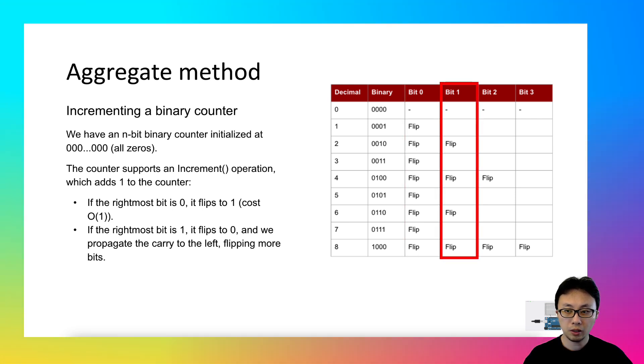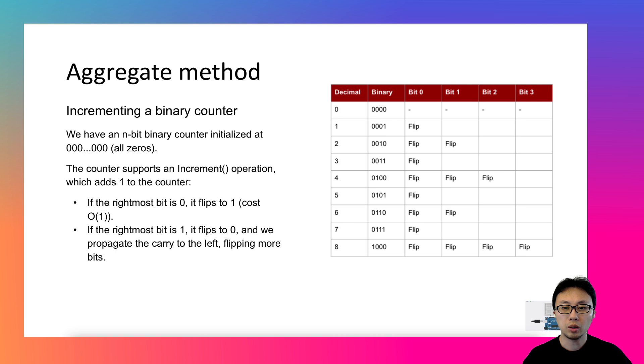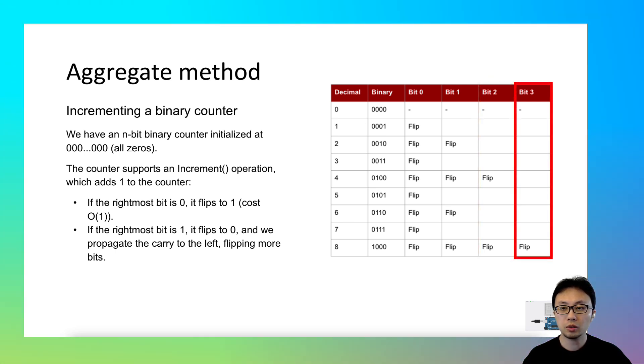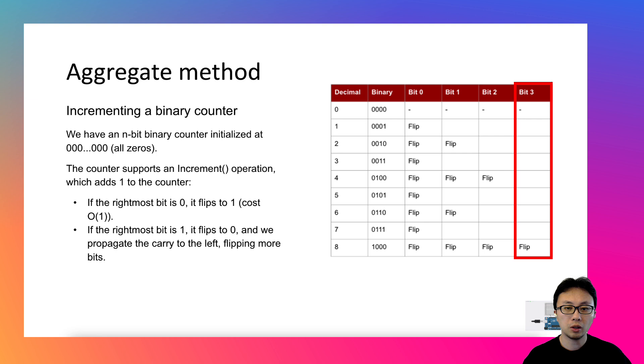Bit 1 only flips for 4 times across the 8 operations. Bit 2 only flips for 2 times, and the leftmost bit, bit 3, only flips for 1 time.